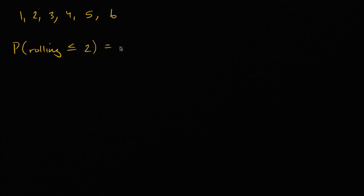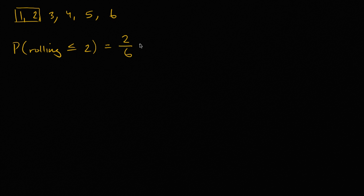Well, there are six equally likely possibilities. Rolling less than or equal to two means I'm either rolling a one or a two — two of the six equally likely possibilities meet my constraints. So there is a two-sixths probability of rolling a number less than or equal to two. I could rewrite that as an equivalent fraction: one-third.